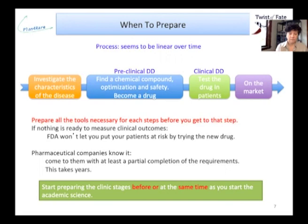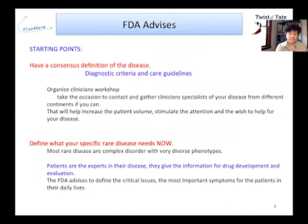Instead of first testing molecules in a model and only when an interesting molecule is found starting to think about the next step — and realizing it will take years — start preparing the clinical stages before or at the same time as you start the academic science. The FDA advises starting with a consensus definition of the disease, which is fundamental before anything else. You can also establish diagnostic criteria and care guidelines. Organize clinician workshops and gather specialist clinicians from different continents to increase patient volume and stimulate attention for your disease.